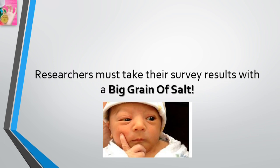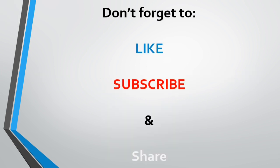Researchers must take their survey results with a big grain of salt, as they may not be as accurate as they would like. Both the wording of survey questions and the order in which they appear can affect the outcome. It is difficult to find wording that will be understood in exactly the same way by all those answering the questions. Questions can be worded in such a way that the desired answer becomes obvious, often resulting in courtesy bias. A question that appears at the end of the survey might be answered quite differently than if it had appeared at the beginning.